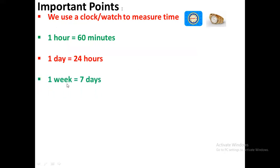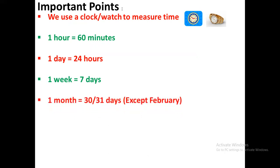One week is equal to seven days — that means seven days make one week; there are seven days in a week. One month is equal to 30 or 31 days; sometimes it is 30 days and sometimes it is 31 days in a month.